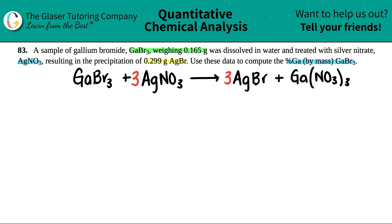Now I'll write out what we got. They told us it's going to result in a precipitation of 0.299 grams of AgBr, and they told us that we had a total sample of gallium bromide which was 0.165 grams. We want to know the percent gallium of GaBr3.